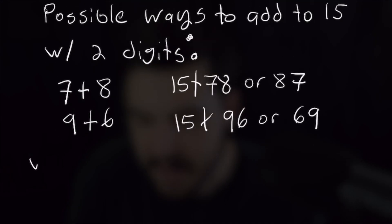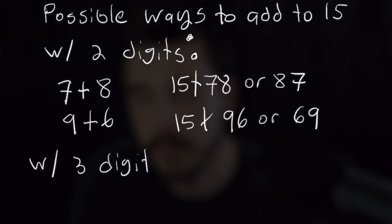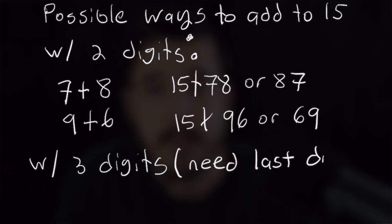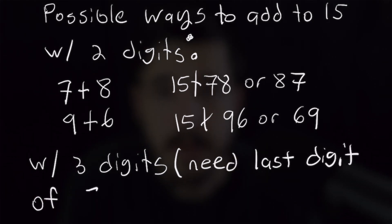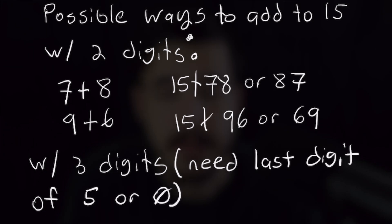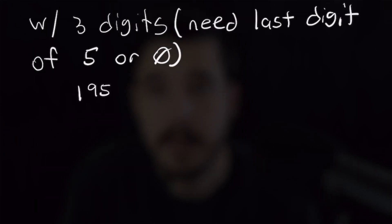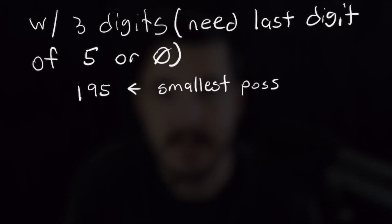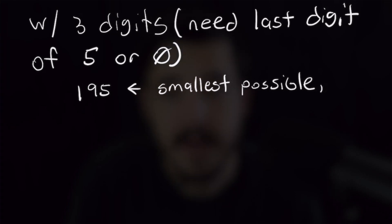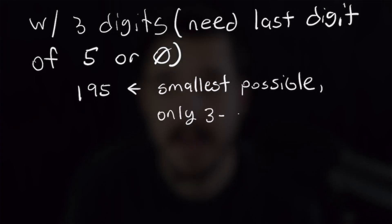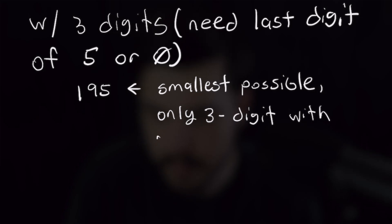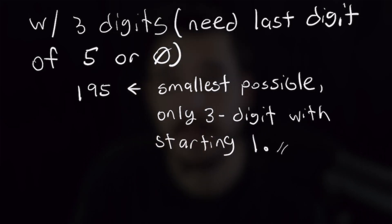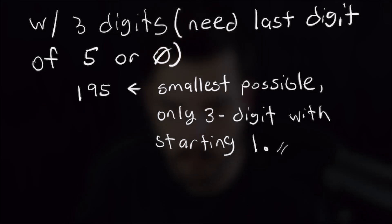With three digits, we know that the last digit has to be 5 or 0. Starting with numbers with a 1 in the hundreds place, the ones place must be a 5, and that gives us only one possibility for the middle digit, which is 9. So 195 is divisible by 15 and we don't have to look any further — that's our smallest possible positive integer divisible by 15 whose digit sum equals 15.